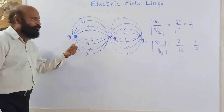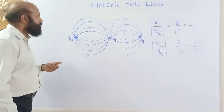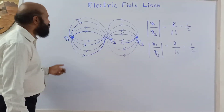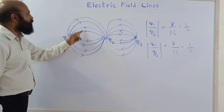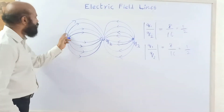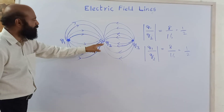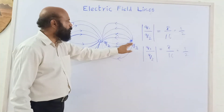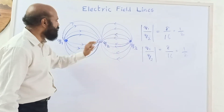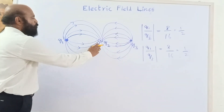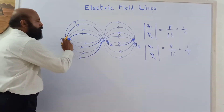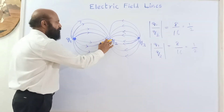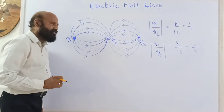In this figure, electric field lines start from Q1 and Q3 — you can understand that from the arrows. Lines are starting from Q1 and Q3 and ending at Q2. Similarly, from Q3 also, lines are starting and ending at Q2. From this it is clear that Q1 and Q3 are positive charges and Q2 is negatively charged.